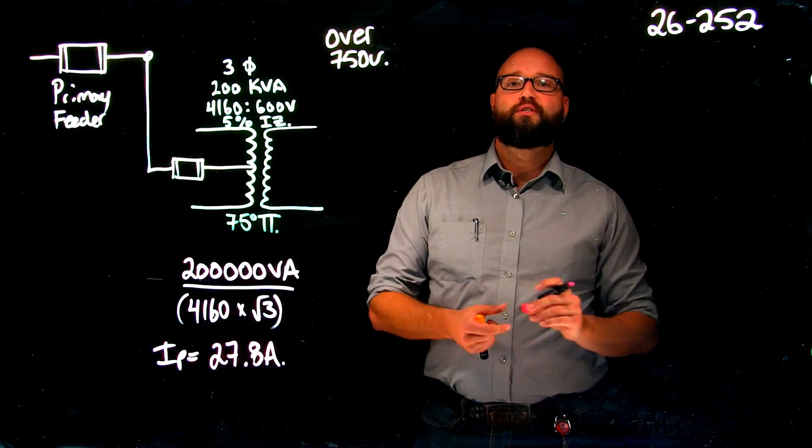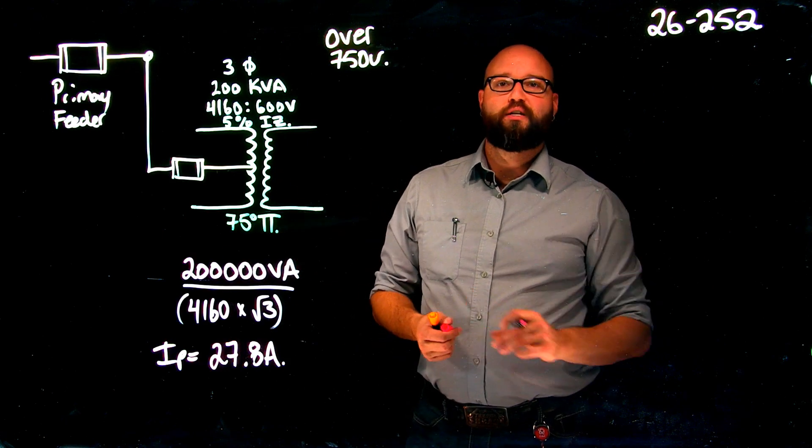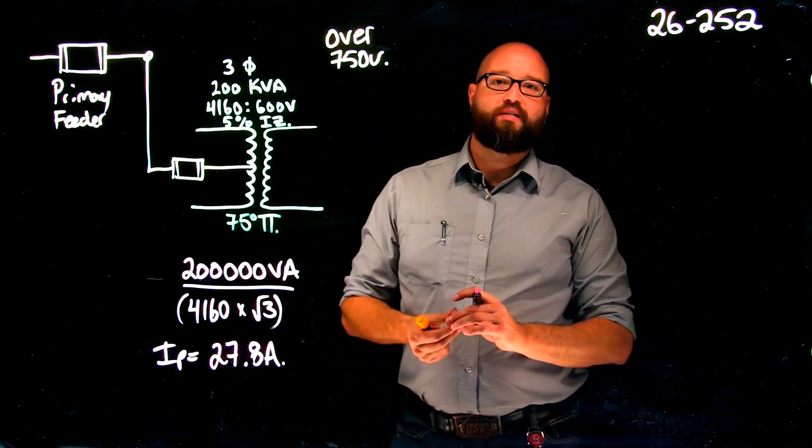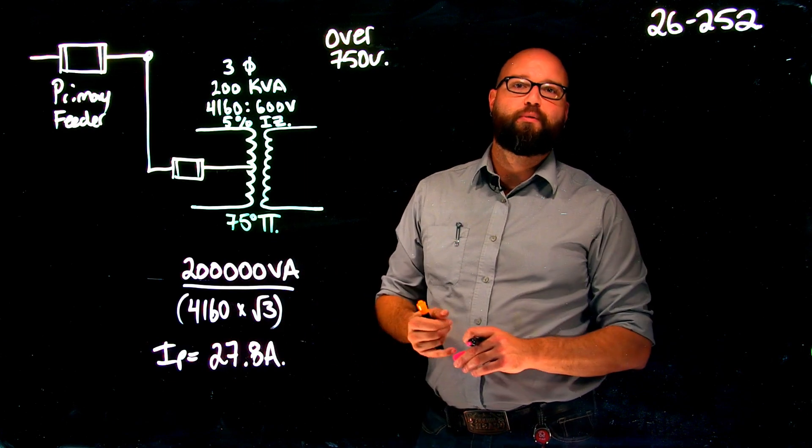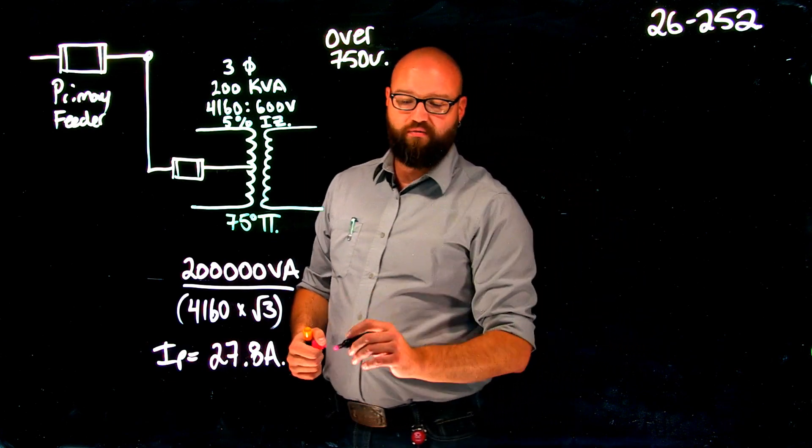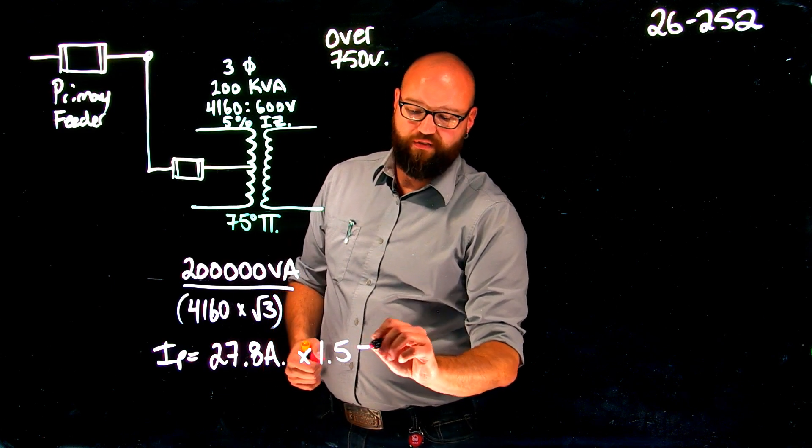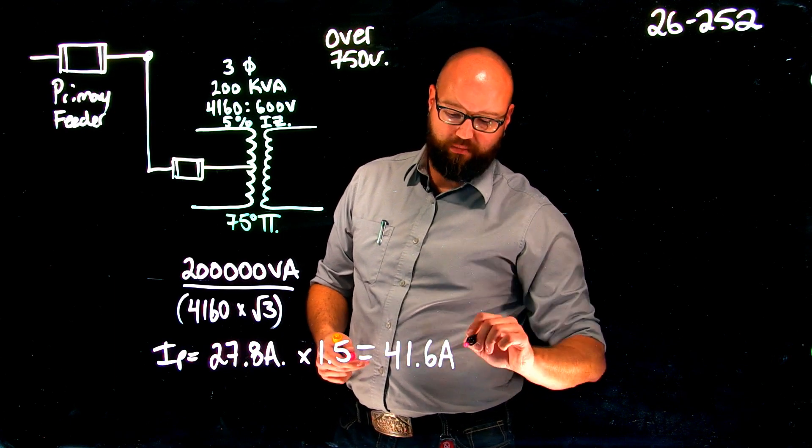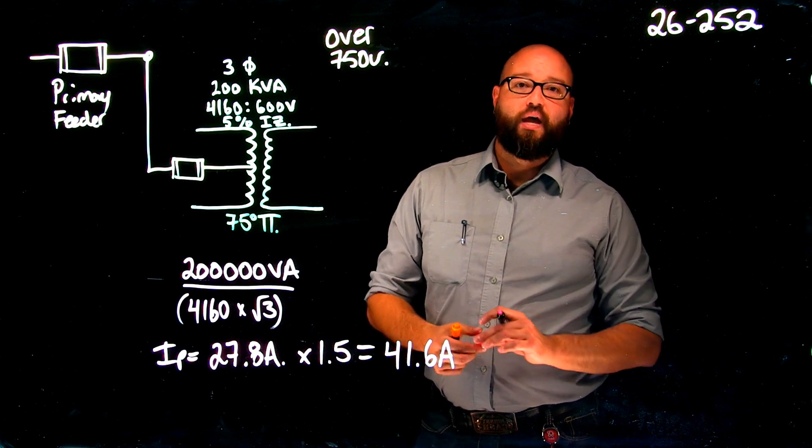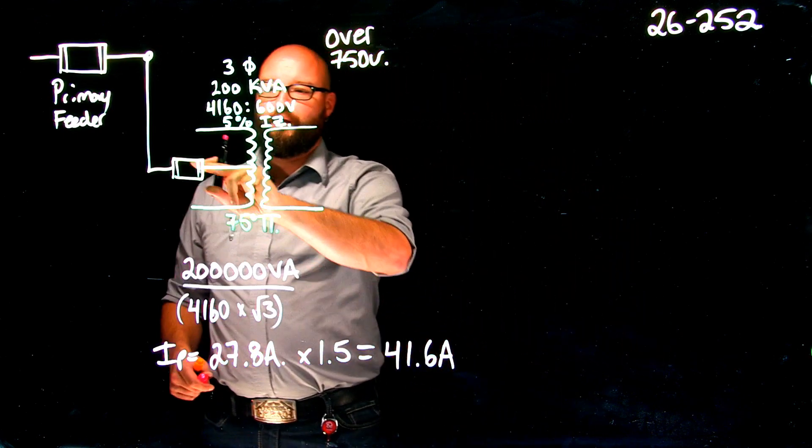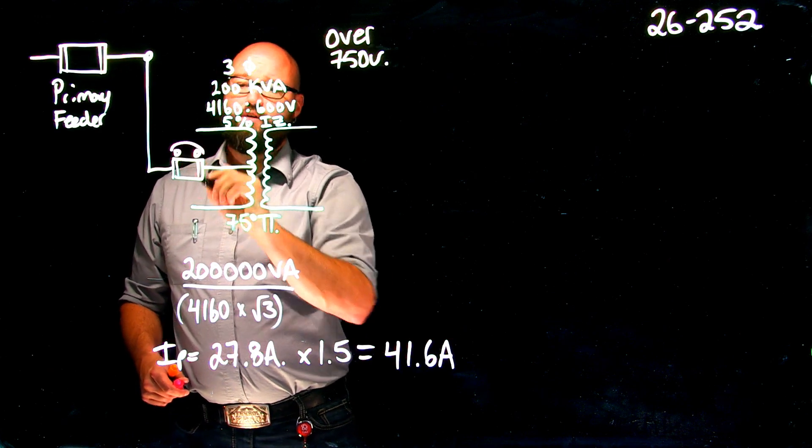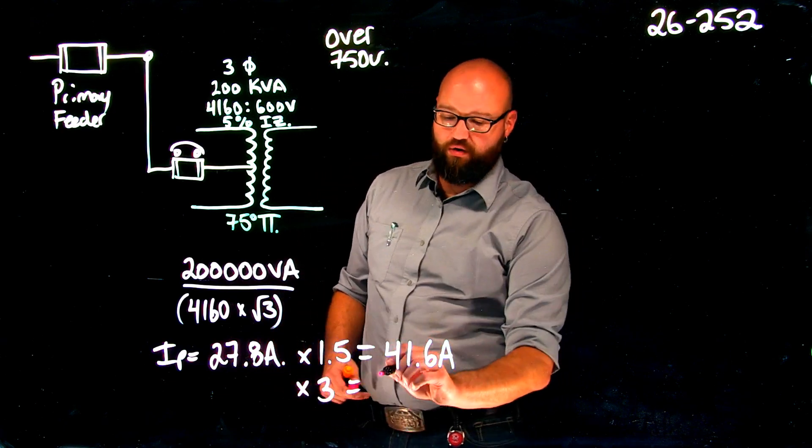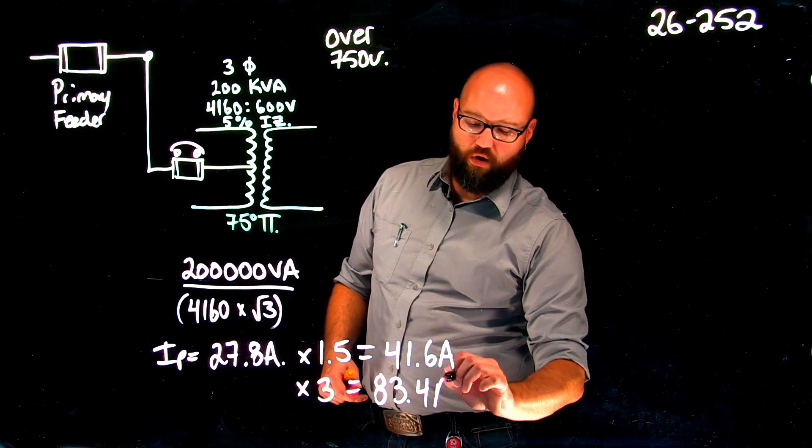26-252 sub-rule 1 tells me if we have primary protection to our transformer only, we are going to take that number and multiply it by 1.5 because it shall be set at not more than 150% of rated primary current, which in this case 27.8 times 1.5 gives me a rated value of 41.6 amps in the case of a fuse. If we are dealing with a breaker, we would use times three or 300%, which gives me a rated value of 83.4 amps.